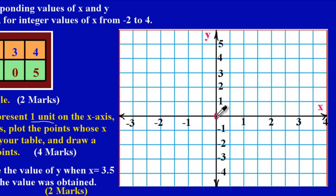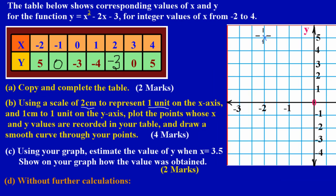To find the coordinate, start at the origin and move the x value first. X is negative two, so I move left — one, two. Now I need to move positive five on the y, so going up: one, two, three, four, five. You'll notice it's in line with the five on the y-axis. That's where negative two on the x and positive five on the y intersect — that's the first coordinate I'll be plotting.